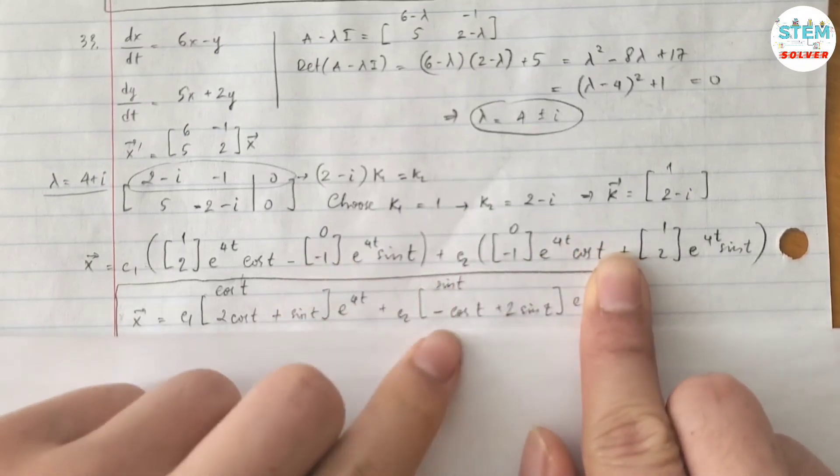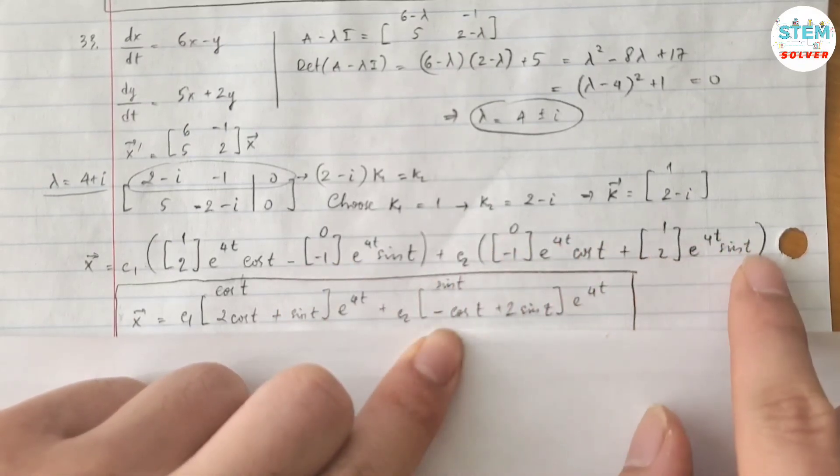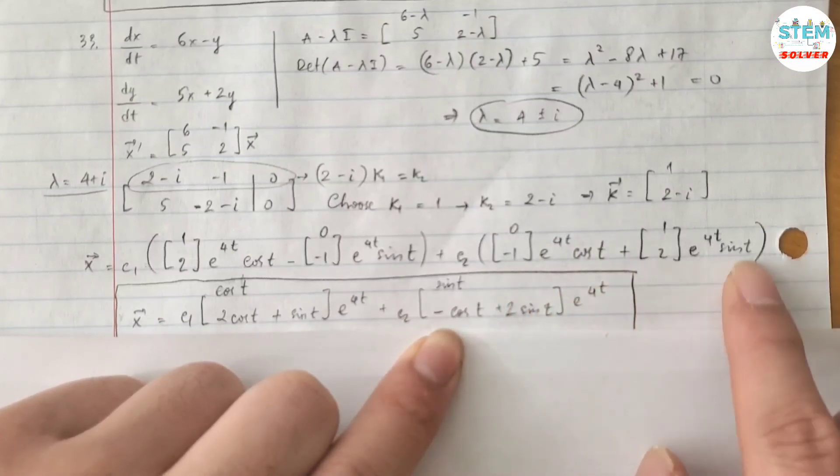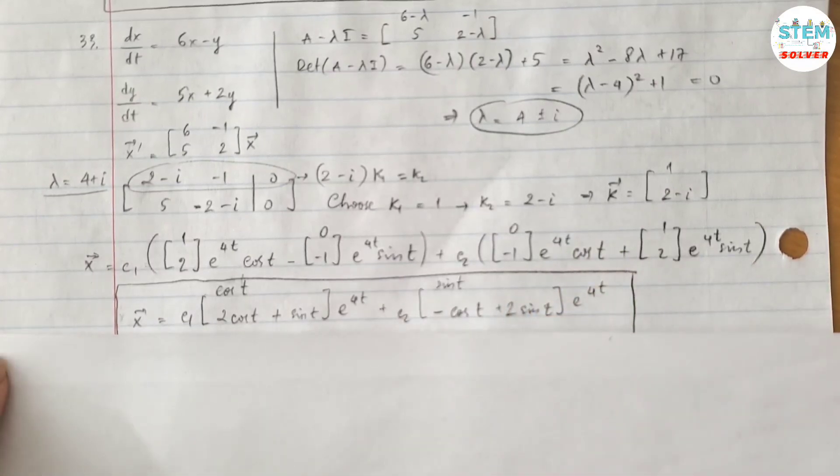And you are going to do the same thing over here. You will have 0 + sin(t), which is sin(t), -cos(t) + 2sin(t), okay? So that's it.